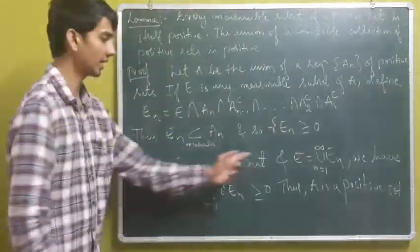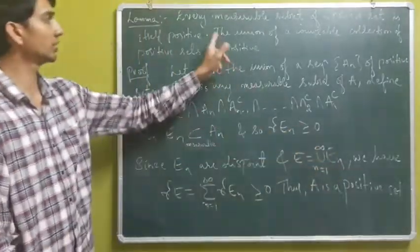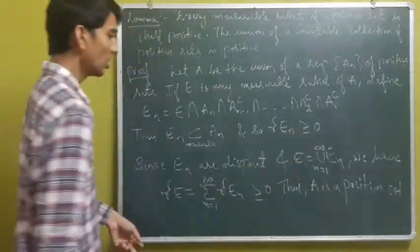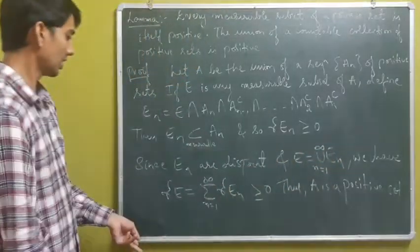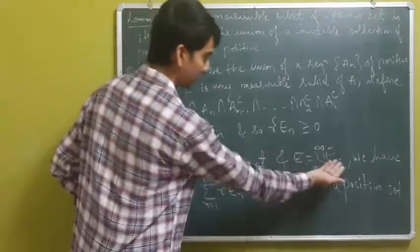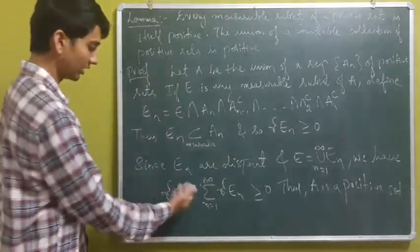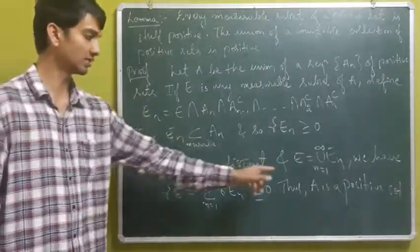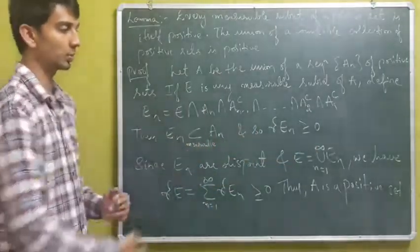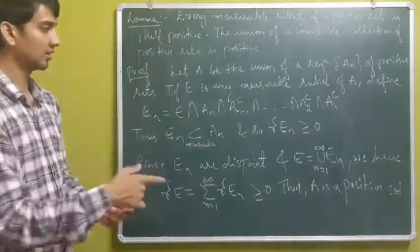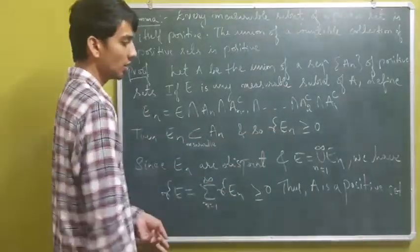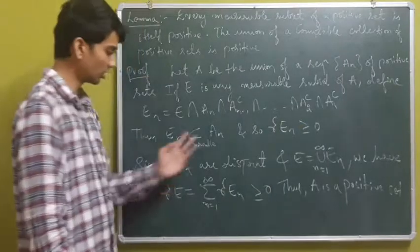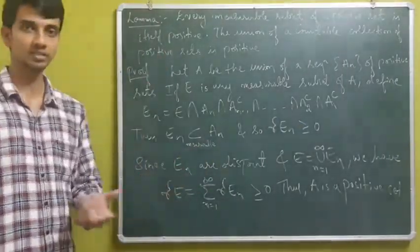Since the E_n's are disjoint and E is their countable union, by countable additiveness the signed measure of E equals the sum of signed measures of E_n's, which is greater than or equal to zero. This implies A is a positive set, and since every measurable subset of A has signed measure greater than or equal to zero, this completes the lemma.